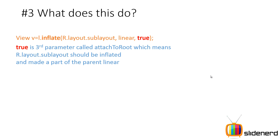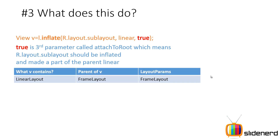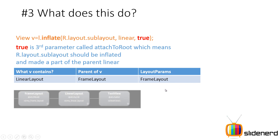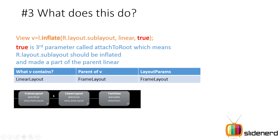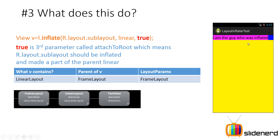But then you ask: what is false? Don't worry, I will show you what happens when you put false. With true it is the same thing — V contains the LinearLayout, because you have already specified a parent. Who is the parent of the LinearLayout? The FrameLayout. The layout params are derived from that parent FrameLayout. The hierarchy is: FrameLayout, LinearLayout, TextView inside the LinearLayout. You are automatically added to the LinearLayout so don't call addView.